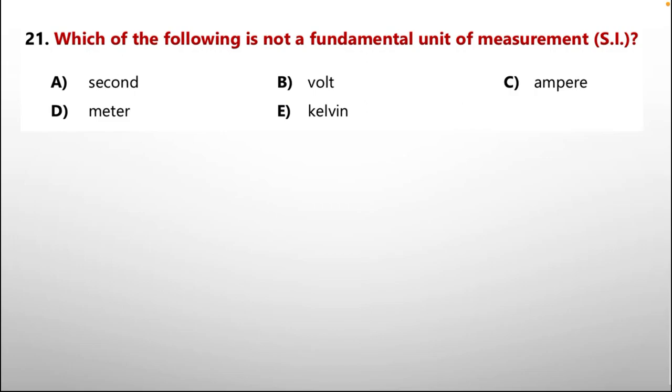Question number 21, which of the following is not a fundamental unit of measurement in SI, that is also called international units of system. Options are A second, B volt, C ampere, D meter, and E kelvin.